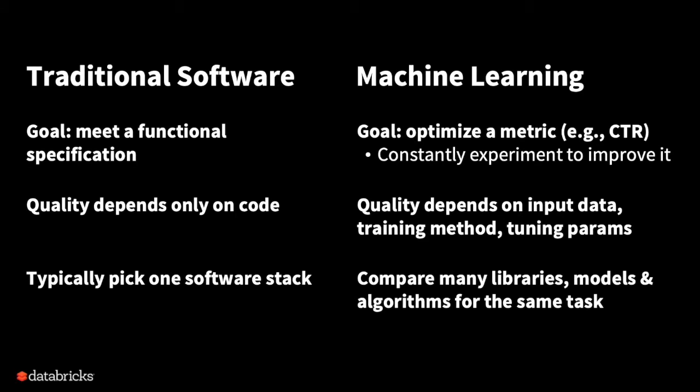In traditional software, you usually pick one software stack. There are many database systems with different pros and cons, but you research them and pick one. In machine learning, the goal is to experiment and do whatever it takes to improve the business metric. So it's actually ideal to mix and match and compare many libraries, models, and algorithms for the same task. No one starts out saying we're just going to use trees — the goal is to get the best performance on that metric.